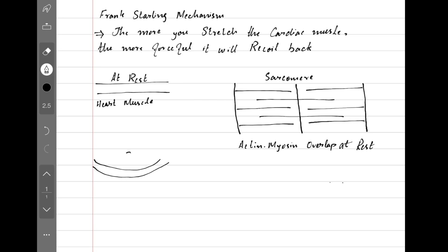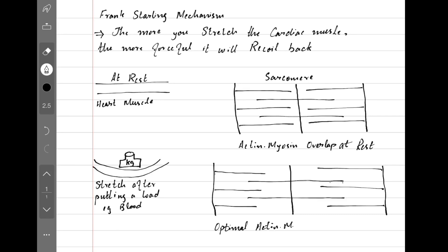Let's put some load onto our muscle, shown here by the kilogram sign. But we all know in real life it's the weight of the blood that stretches the cardiac muscle. We go to the microscope again and find out that actin and myosin are now further apart but still overlapping.